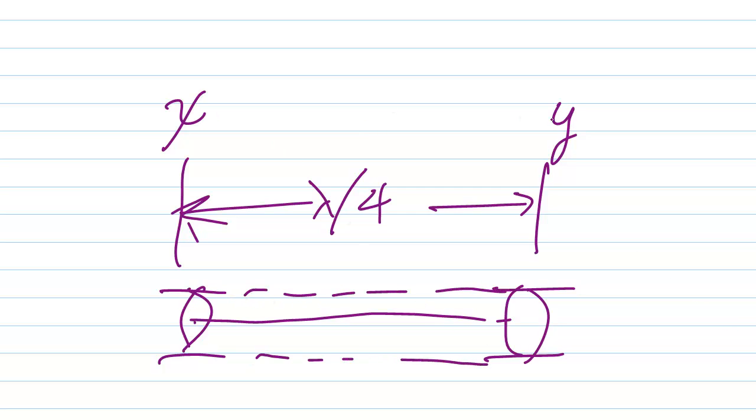In order to match these two impedances, you need to have the line's characteristic impedance equal the geometric mean of the purely resistive impedances at the end of the line.